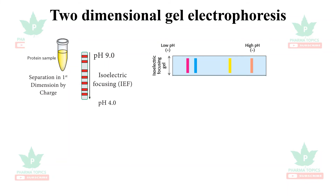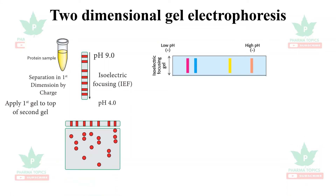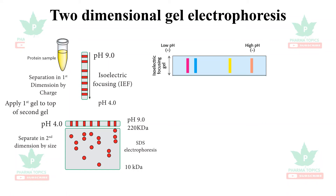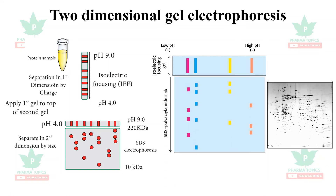In isoelectric focusing, separation can be from low pH to high pH or high pH to low pH. The first gel is then applied to the top of a second gel — one horizontal and one vertical. The second separation is based on size using SDS-PAGE, while the first separation was based on charge. This combined technique is called two-dimensional SDS-PAGE.